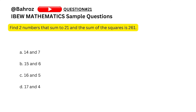Question twenty-one: find two numbers that sum to 21 and whose sum of squares is 261. Trying option A — 14 plus 7 is 21. Square of 7 is 49, square of 14 is 196: 196 plus 49 is 245, not 261. Try option B — 15 plus 6 is 21. Square of 15 is 225, square of 6 is 36: 225 plus 36 is 261. So B is our answer.